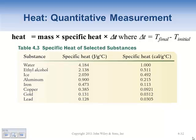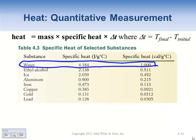Here's the math behind it. The heat absorbed equals mass times specific heat times the change in temperature. That delta-T - the change in temperature - is the final temperature minus the initial temperature. You subtract those two to get delta-T, then multiply by the specific heat, which is in joules per gram degree Celsius (or calories per gram degree Celsius). The table shows specific heats of various substances compared to water as the universal standard.